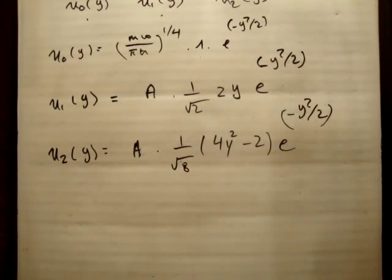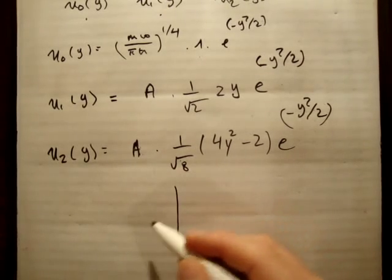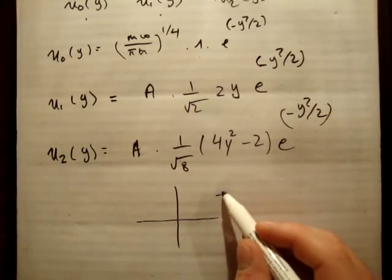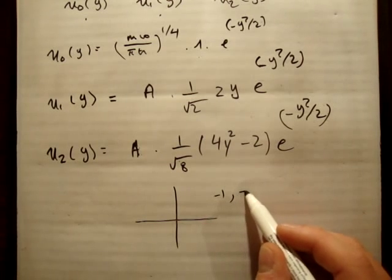These wave functions are either even or odd, and this is due to the invariance of the Hamiltonian under inversion. Now I don't know if I did a video on this, but basically the Hamiltonian commutes to the parity operator. And that means that basically the parity operator has eigenvalues of minus 1 and plus 1.